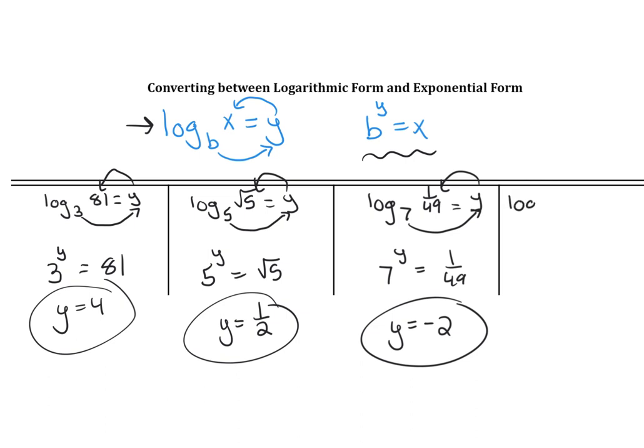Last example of this form. If I just have log of 100,000, when there is no base, that's called a common logarithm, so that is base 10. 10 to what power is 100,000? You can just count your zeros, so that would be 5.